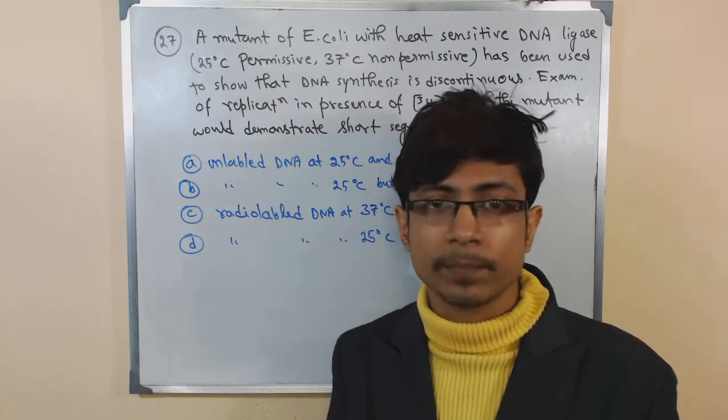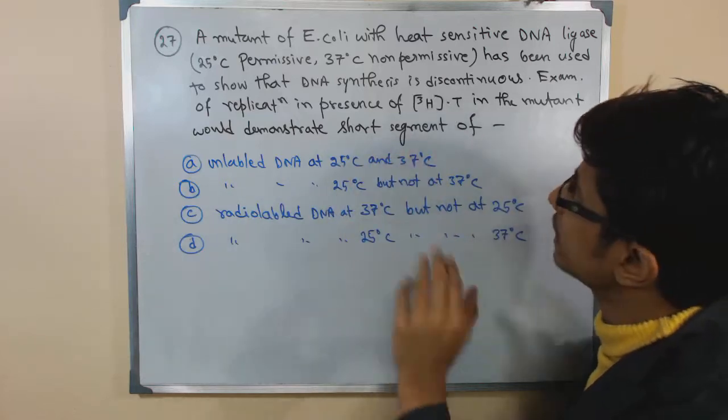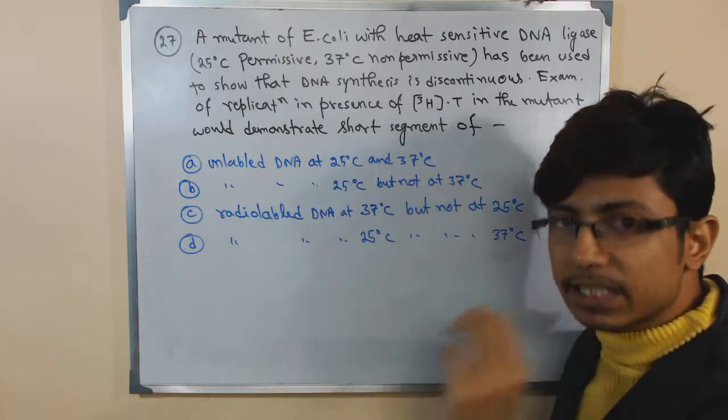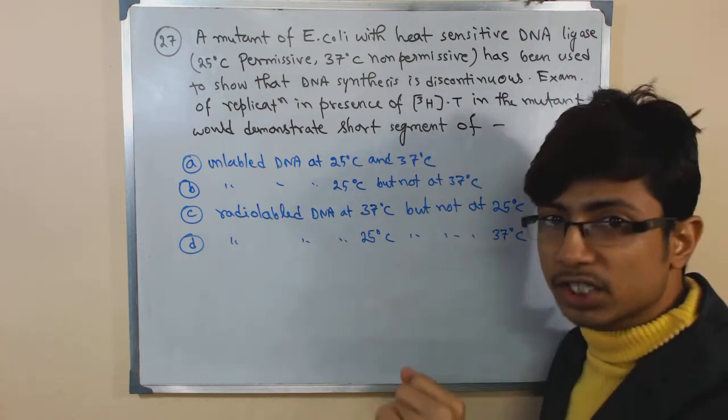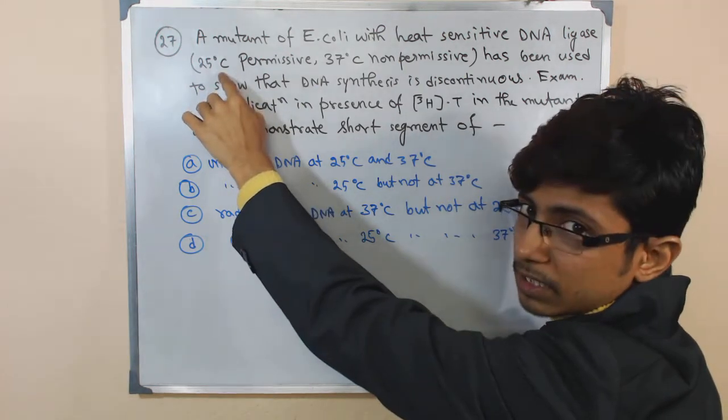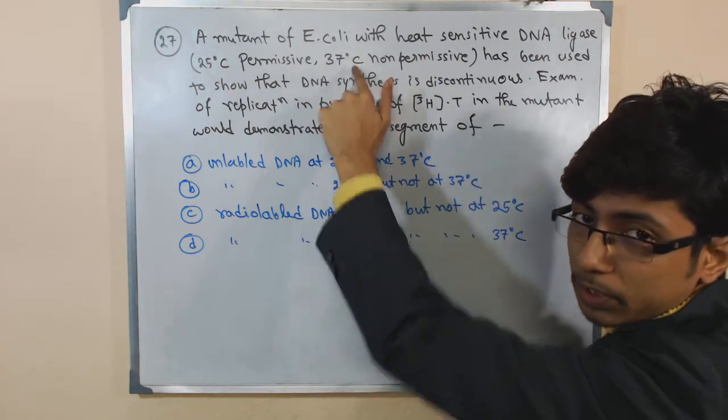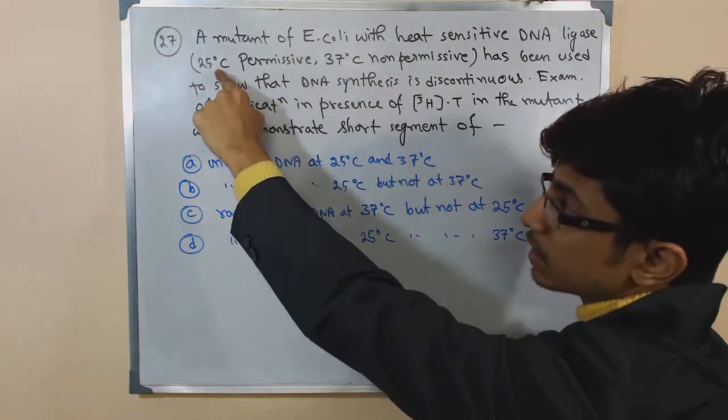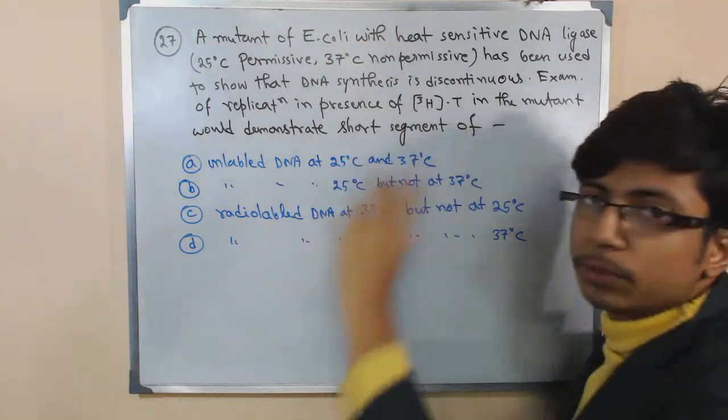For example, in this case, the E. coli DNA ligase is heat-sensitive, not heat-resistant. Now in that case, it can function at 25 degrees Celsius temperature, but it cannot function at 37 degrees Celsius temperature. That's the difference. Can function at 25, cannot function at 37. So this is what you need to understand. How DNA replication will work if it only works at 25 and does not work at 37?